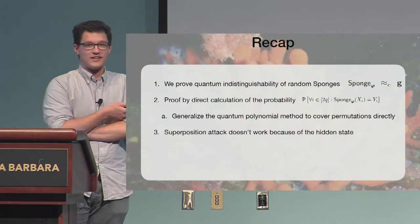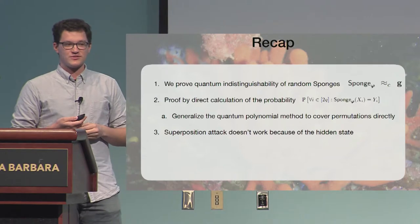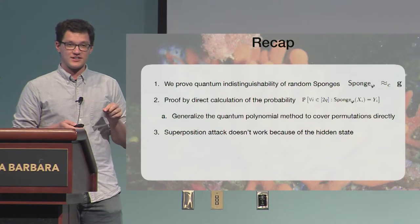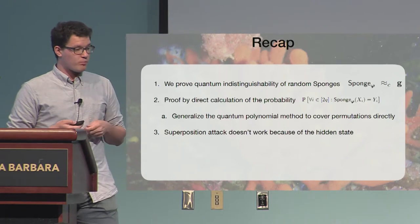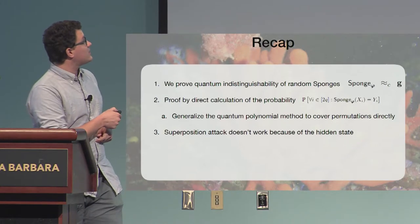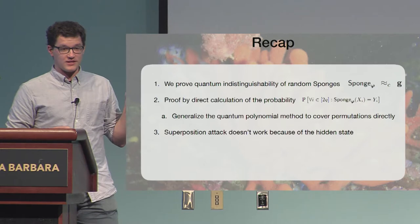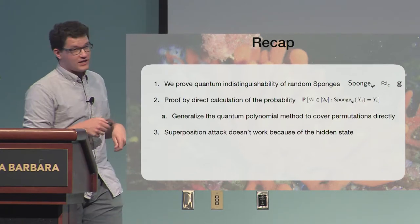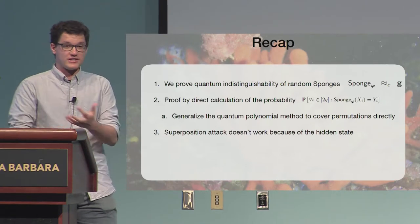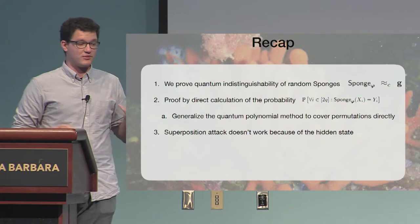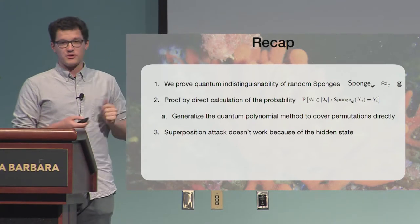So, this is basically it. So what we have done, we've proven quantum indistinguishability of random sponges. So this is the technical part and you can use it to know that sponge keyed by keying the internal function is quantum secure, so pseudorandom function in this very strong model. Now we did it by direct calculation of the probability. I didn't say it before, but we also managed to prove the whole statement for f being a pseudorandom permutation, or phi being a random permutation directly. So not going through the PRF, PRP switching lemma, but looking at the polynomials and kind of generalizing a bit the bounds. So this might be of independent interest.